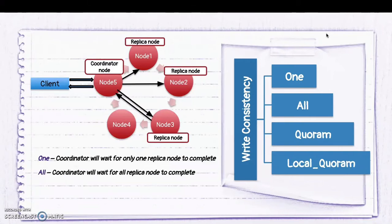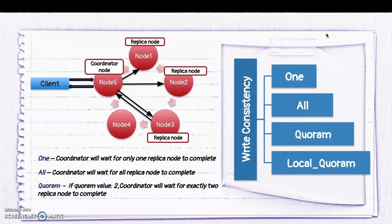With consistency level All, the coordinator node waits for all replica nodes — nodes 1, 2, and 3 — to complete before sending the success acknowledgement back to the client. With consistency level Quorum, if the quorum value is 2, the coordinator node waits for exactly 2 replica nodes to complete. So those are the Level 1, All, and Quorum consistency levels.